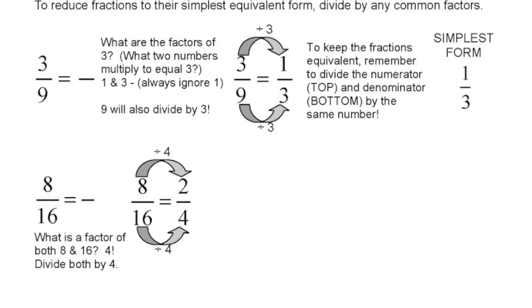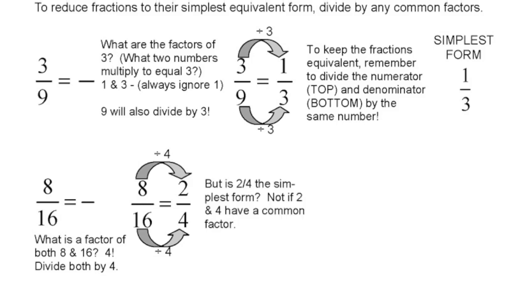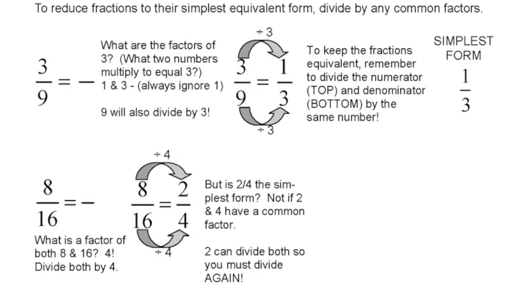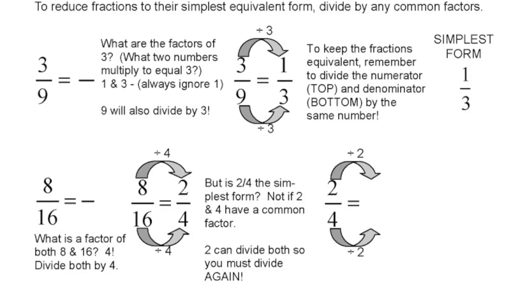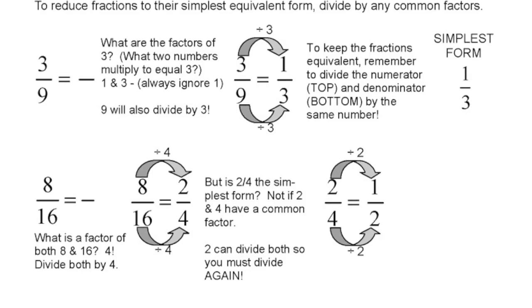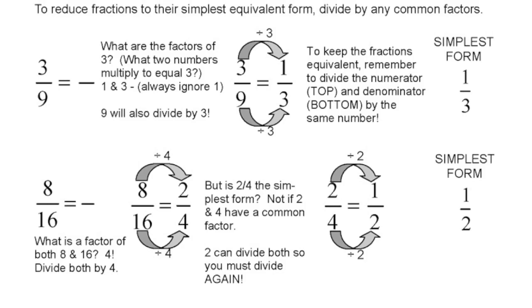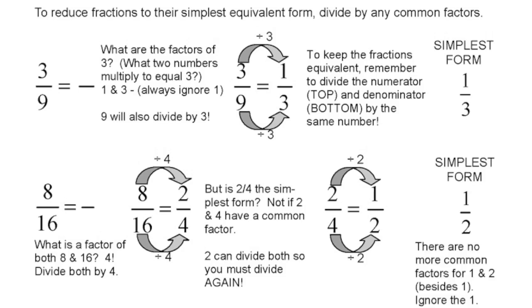No, because two-fourths is not in the simplest form. Two and four also have a common factor. So let's find out what that is. What goes into both 2 and 4 besides 1? It's 2. So then what we can do is we just divide by both 2 and 4 again by 2. So 2 divided by 2 and 4 divided by 2, that ends up with 1 and 2, so 1 half. So the simplest form for this one is just 1 half. Since there are no more common factors between 1 and 2 besides the 1, that's why it's in simplest form now.